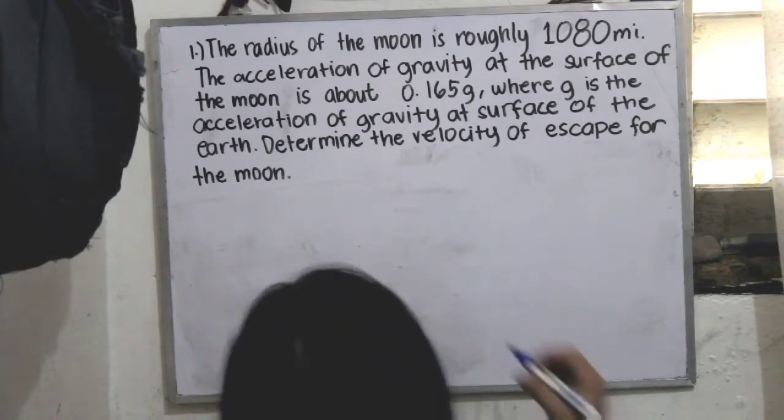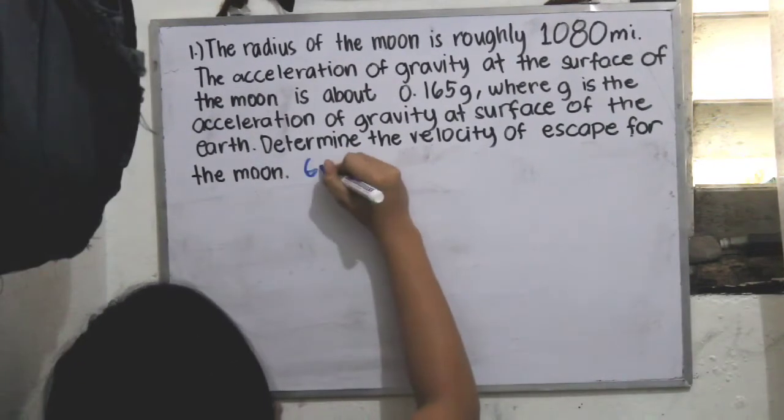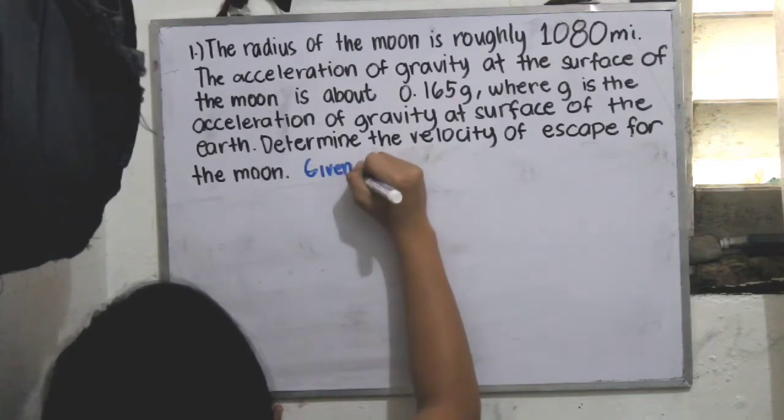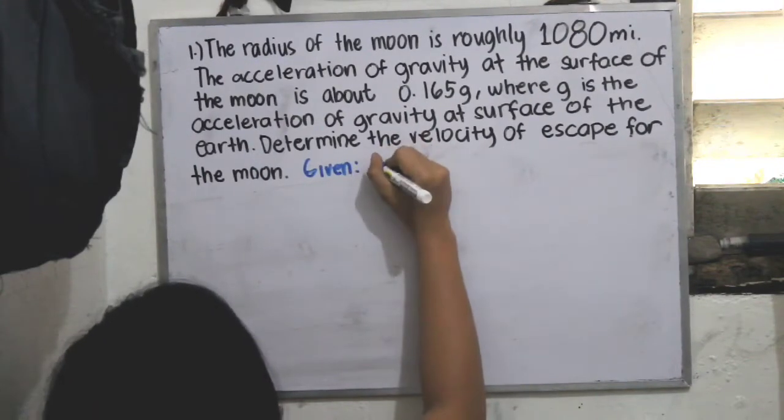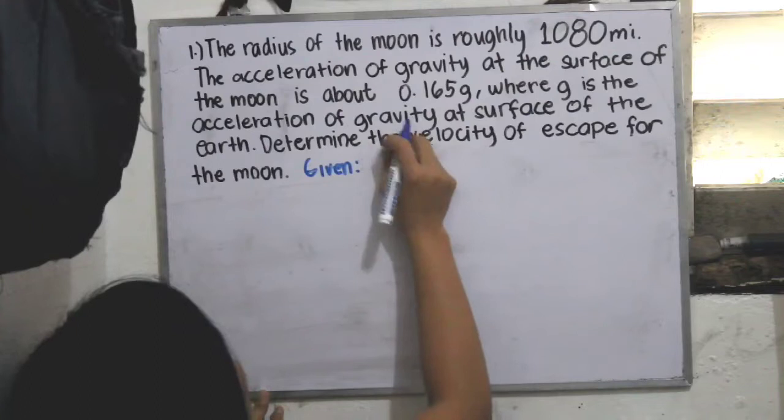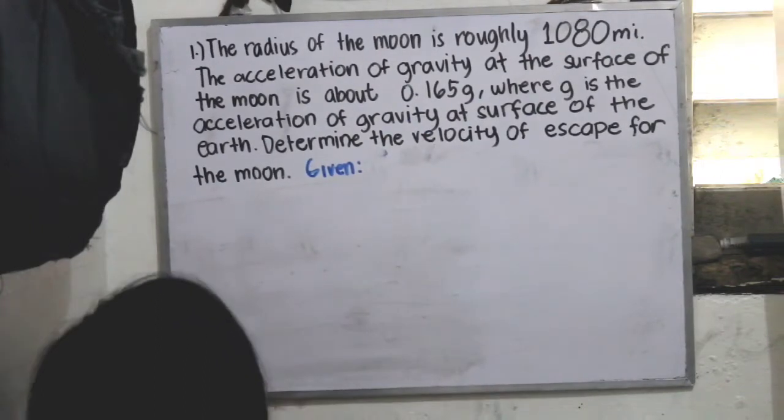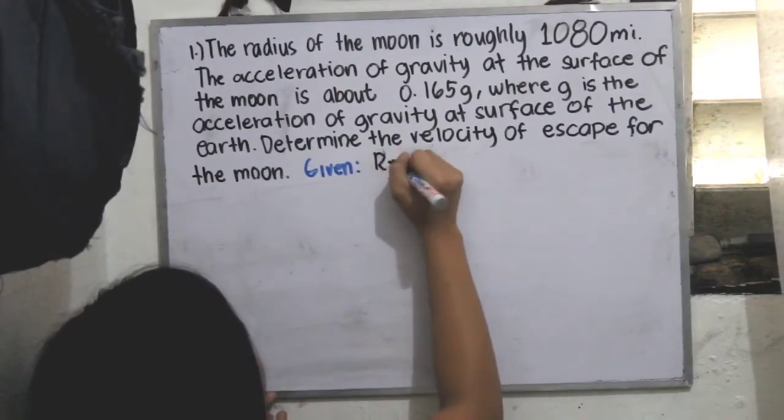So first we have to write the given. In the problem, we are given the radius of the moon, which is 1080 miles.